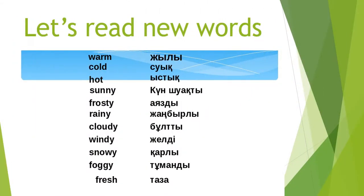Let's read new words and repeat after me. Warm — jelly. Cold — suwek. Hot — ıstıq. Sunny — kınşuakdı. Frosty — ayazdı. Rainy — şağmbırlı. Cloudy — bultdı. Windy. Snowy. Foggy. Diamond. Fresh.